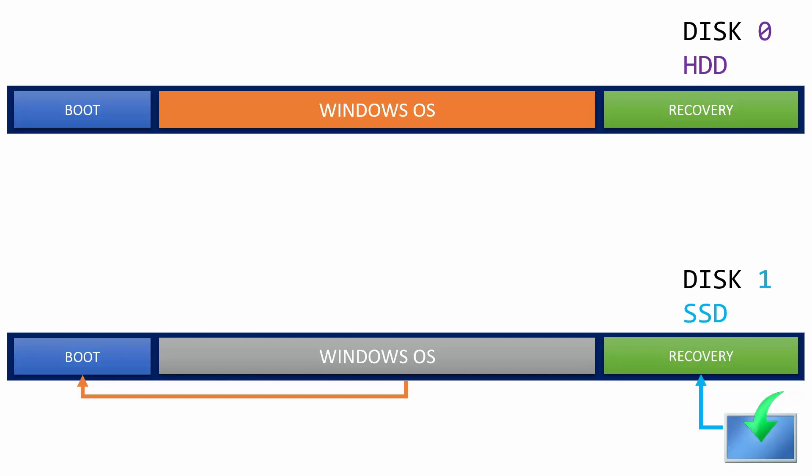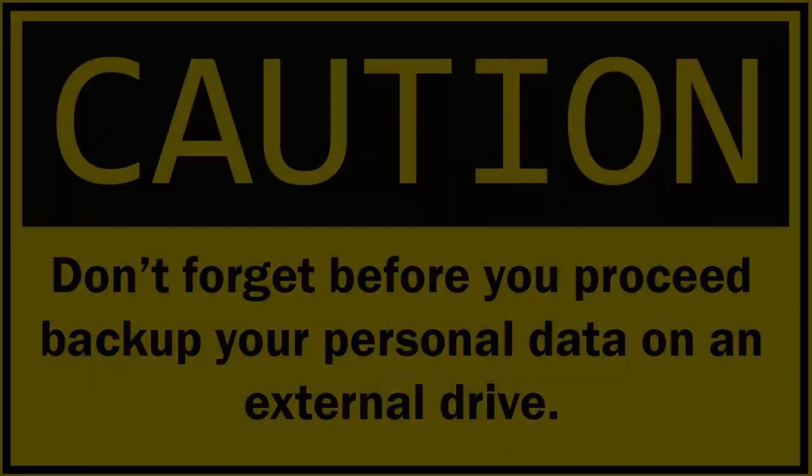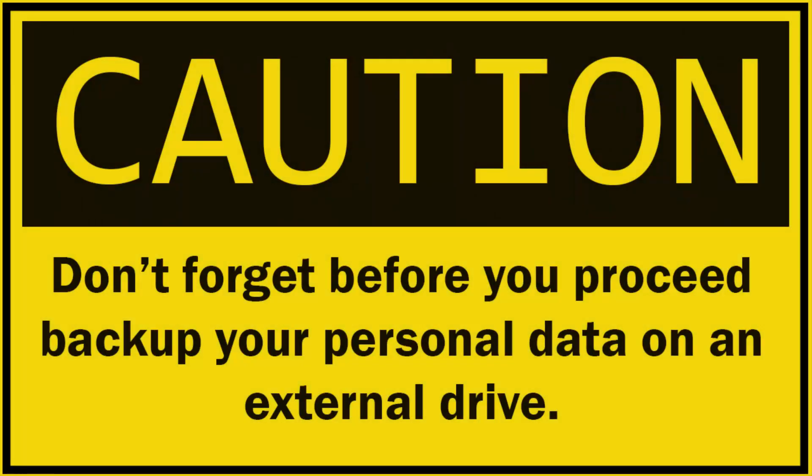I'll show you how to copy or clone Windows from one disk to another without using any third-party software, just using the Windows built-in utility tools: DISM and diskpart. Before proceeding, backup your personal data on an external drive.